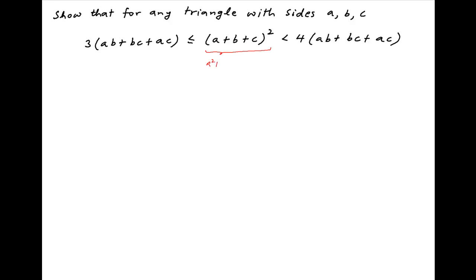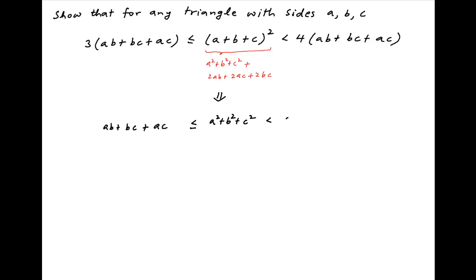The middle term in the given inequality: (a + b + c)² can be written as a² + b² + c² + 2ab + 2ac + 2bc. Therefore, the inequality in the problem statement can be rewritten as: a² + b² + c² ≥ ab + bc + ac, and is strictly less than 2ab + 2ac + 2bc. We will start by proving the first part of this inequality.